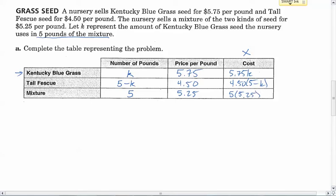The nursery uses five pounds of the mixture, so the mixture is going to be five pounds. That means the tall fescue has to be whatever's left over. We start with 5, K of them are Kentucky bluegrass, and so the rest, 5 minus K, is going to be the tall fescue. This is what we want the final cost to be. We want the final weighted average to come out as 5.25.